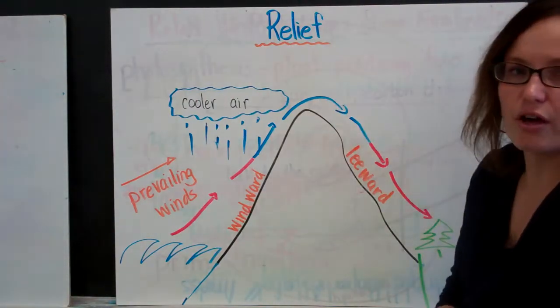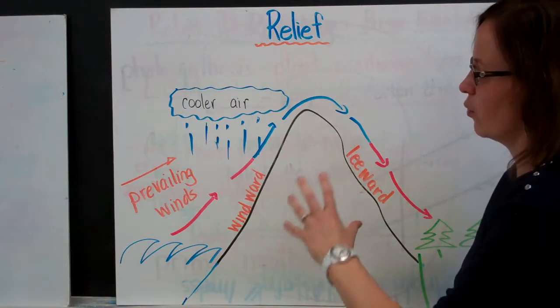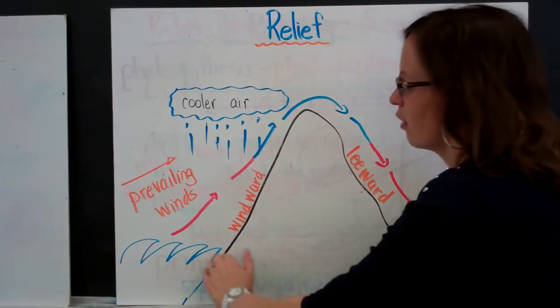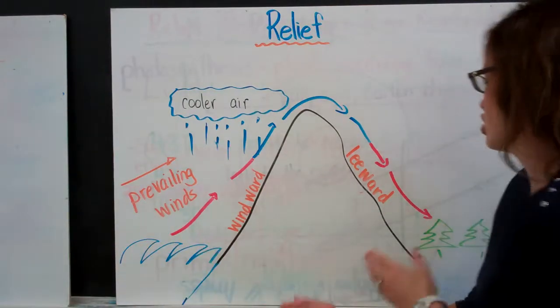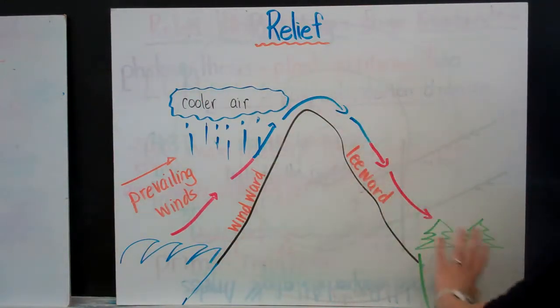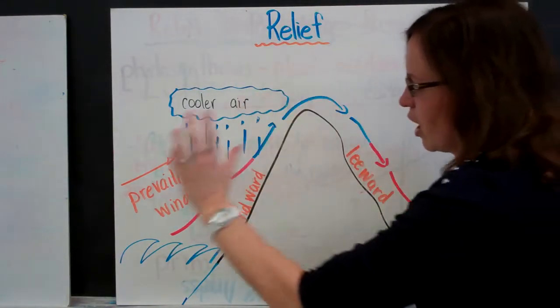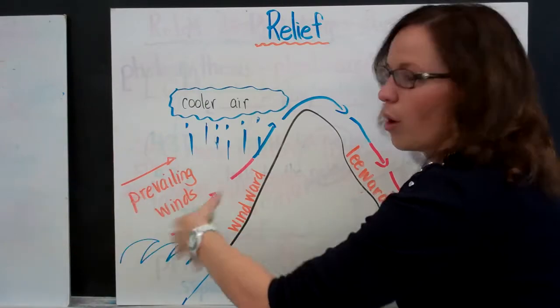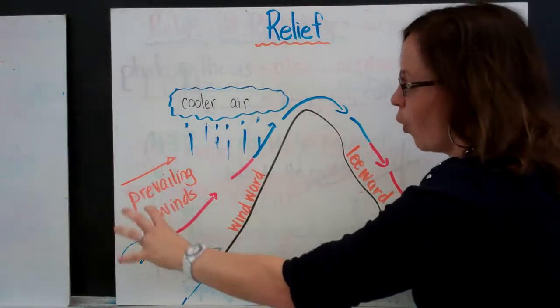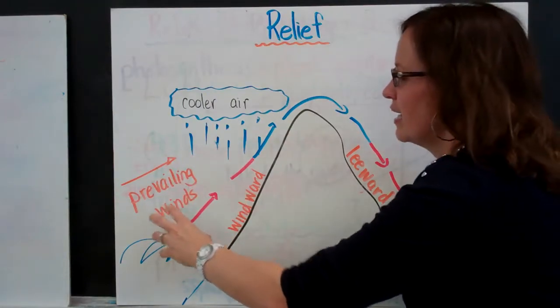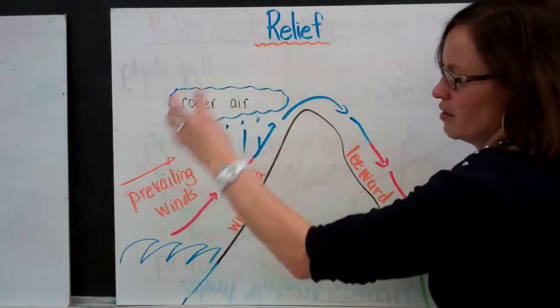Now relief is also connected to elevation and it's specifically related to when there is a mountainous region close to a large body of water. So here we're imagining we have our ocean and then we have our mountainous region, and on the other side we have our land. So when an air mass comes from a large body of water, it contains a lot of moisture. So it's warm, moist air. It doesn't mean that it's hot, it just means that it contains more heat here than it does at the top.